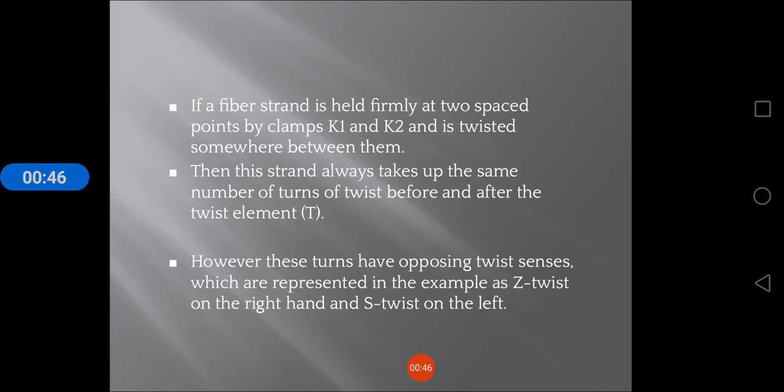If the fiber strand is held firmly at two spaced points by clamps K1 and K2 and is twisted somewhere between them, then the strand always takes up the same number of turns of twist before and after the twist element. However, these turns have opposing twist senses, which are represented in the example as Z-twist on the right hand and S-twist on the left side.